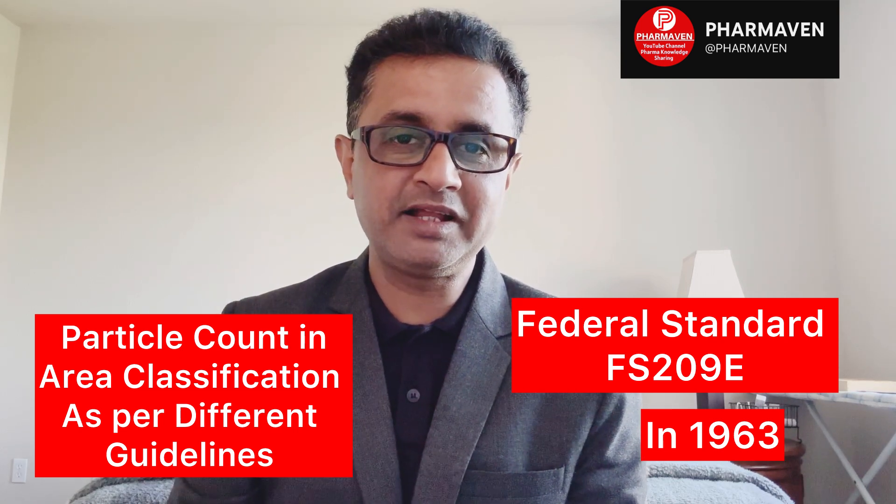Areas were classified based on the number of particles — specifically 0.5 micron particles per cubic feet. The classifications were Class 100, Class 1000, Class 10,000, and Class 100,000. For example, Class 100 means not more than 100 particles of 0.5 micron per cubic feet. This was the first area classification based on particle count, as per FS 209E in 1963.